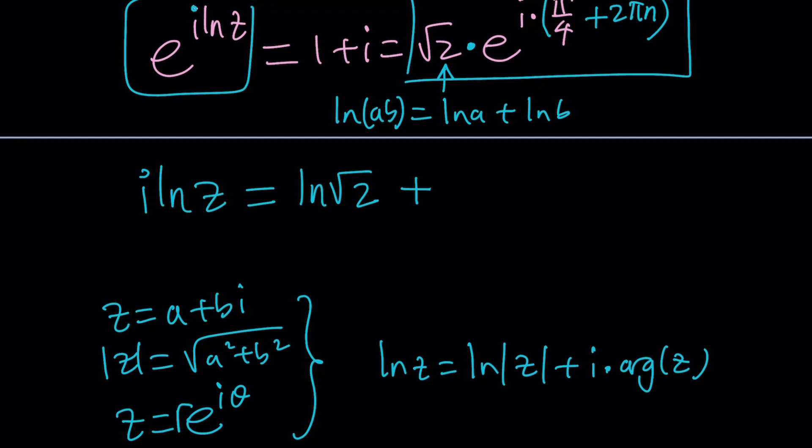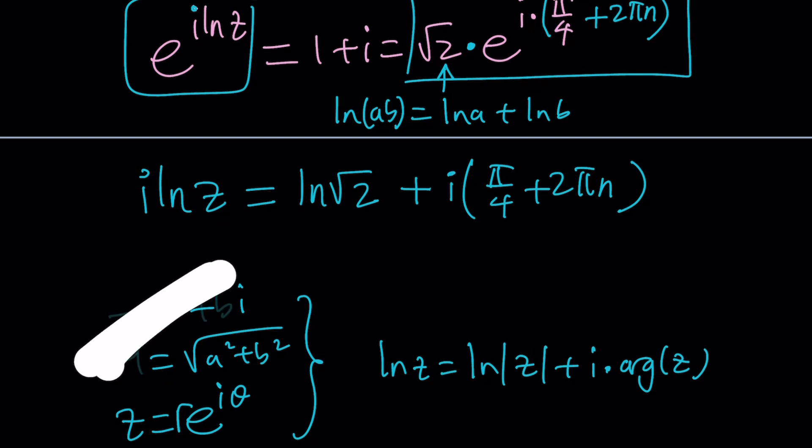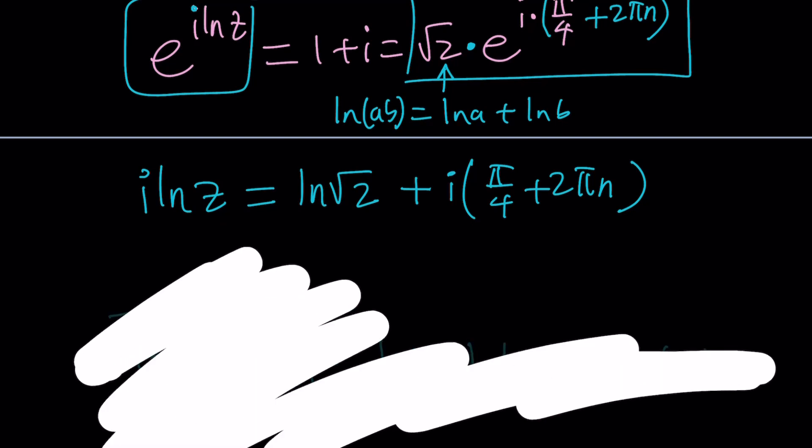When you ln the second part you're going to get i times pi over 4 plus 2 pi n. Awesome. Now how do we solve for z from here?